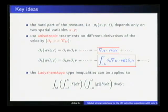Some ideas are absorbed to overcome these difficulties. First is that it was noted that the hard part of the pressure p depends only on two spatial variables. Next, we use an anisotropic treatment on different derivatives of the velocity. Precisely, when we do the energy inequality of the same order derivatives, we always do the z derivative first and then the horizontal derivatives.